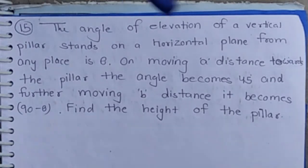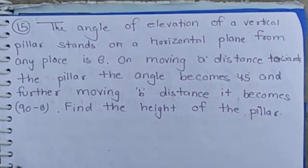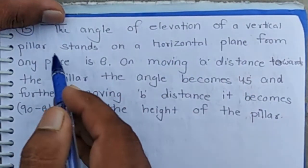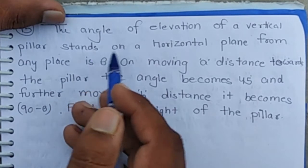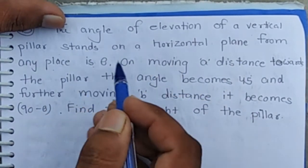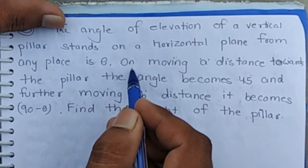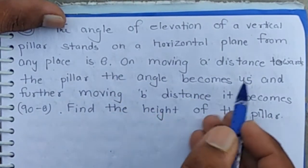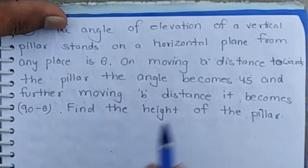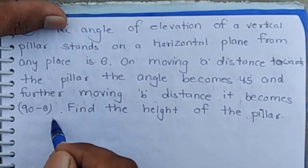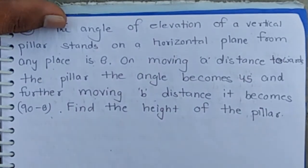Good morning class. It is question number 15. The angle of elevation of a vertical pillar standing on a horizontal plane from any place is theta. On moving a distance towards the pillar, the angle becomes 45, and on further moving b distance it becomes 90 minus theta. Find the height of the pillar.